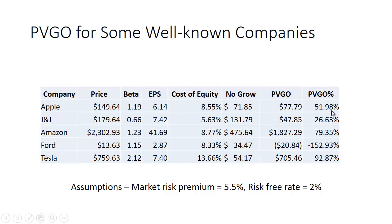I calculated the PVGO as a percentage by dividing it by the stock price. You can see that a little more than half of Apple's price is made up of the present value of growth opportunities. For Johnson & Johnson, subtracting the no-growth value from the current price gives a PVGO of $47.85 — only 26.63% of the stock price is made up of this growth opportunity.